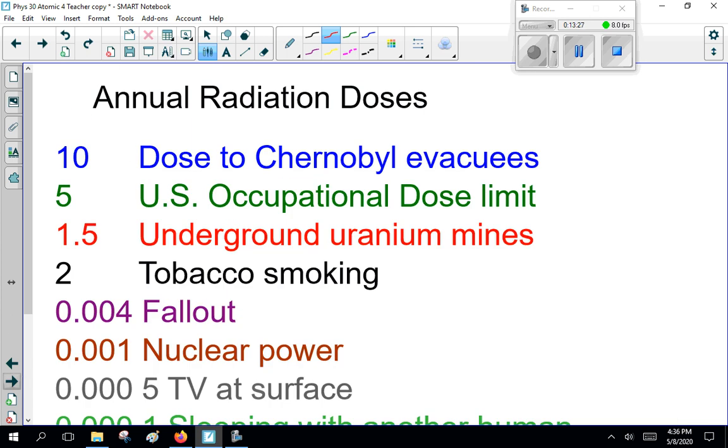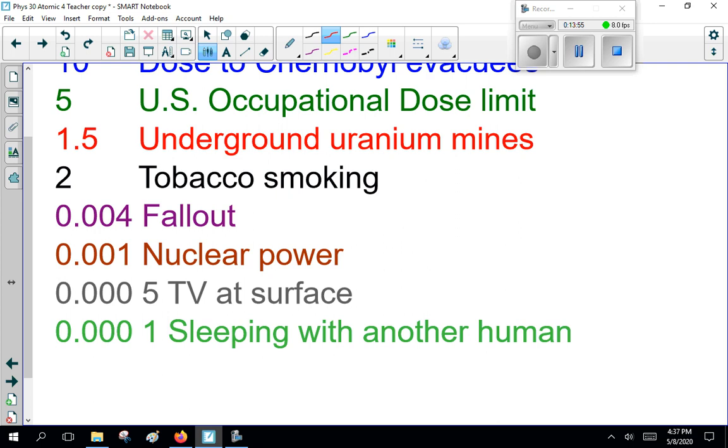Now, annual radiation to cheer you up, the annual radiation doses. Chernobyl, if you guys watch that Chernobyl video, yeah, you get 10.5 sieverts is the annual U.S. occupational dose limit. That's how much you can be exposed to in a year. Underground uranium miners usually get about 1.5 sieverts a year. You smoke tobacco, you get about two because you're inhaling so much crap into your lungs. Fallout from nuclear weapons that we've tested in the atmosphere. We stopped doing that, thankfully. 0.004 sieverts a year. A nuclear power plant, if you live close to one, you'll get about 0.001 sieverts a year.